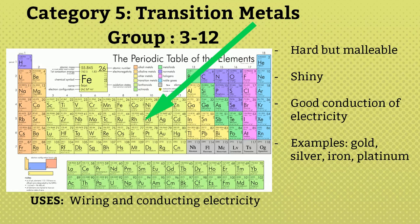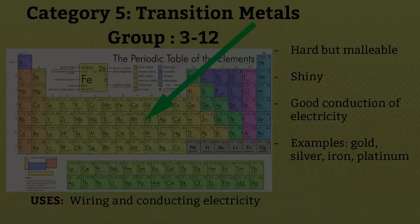Category 5: they are transition metals, belonging to the D-block, from group 3 to group 12. They are hard but malleable and shiny. All transition metals are good conductors of electricity — for example, gold, silver, iron, platinum, and copper — that's why they are used in wiring and conducting electricity.